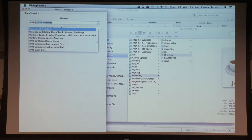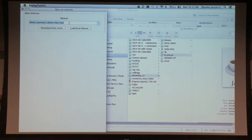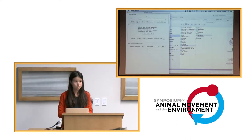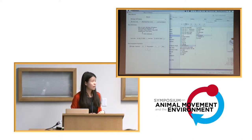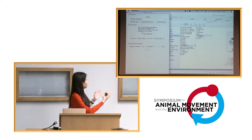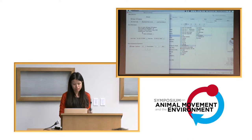Some data you may not have access to, but for data you do have access to, you can either download from the server or use a local copy if you've downloaded it before. Once you select a dataset, it shows basic statistics: the dataset name, how many individuals, the time span of tracking, and the average sampling rate.